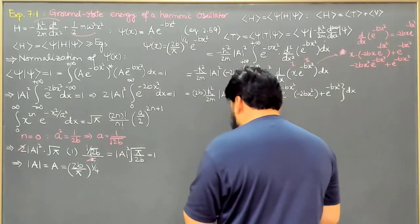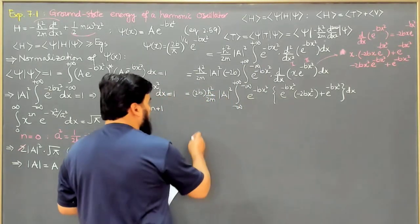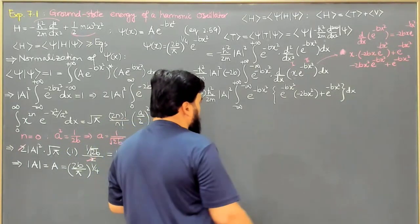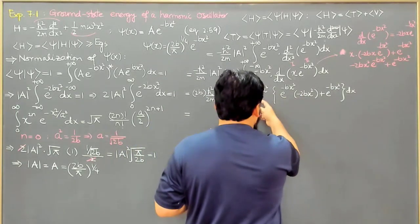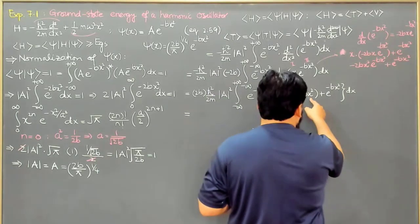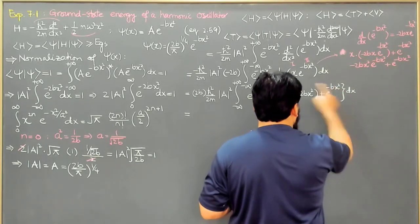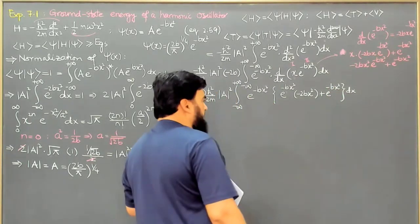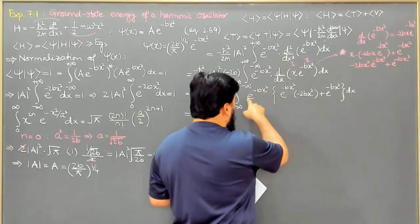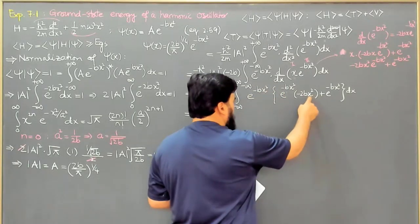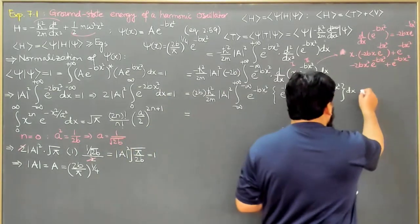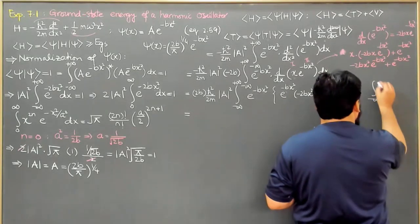Now I will have to write this thing again. This is equal to: if this is multiplied with this, it will become minus 2bx². Here is x², and here this will also become minus 2bx². So again, this is an even function, because when we change the sign of x, here it is squared and it is exponential, so it does not matter — it is squared, so it will also be the same.